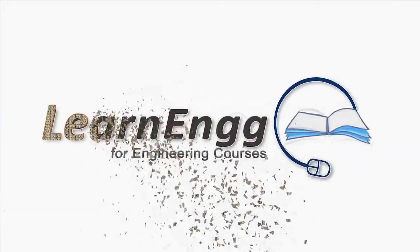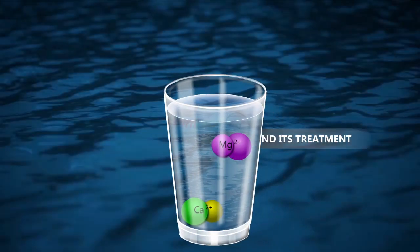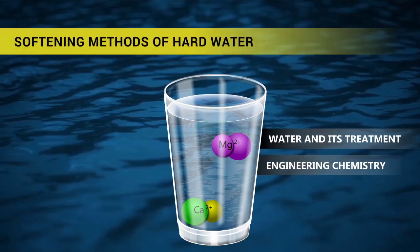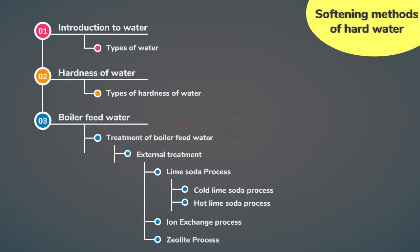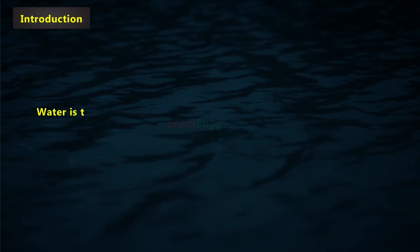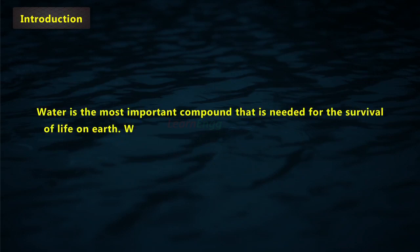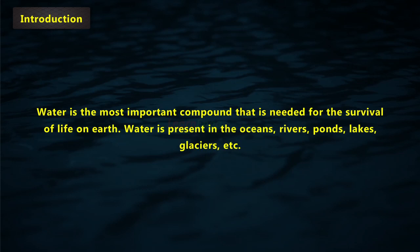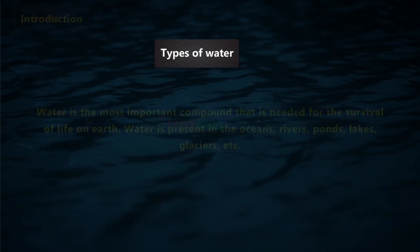In this video, we are going to learn about softening methods of hard water, which is a part of water and its treatment under engineering chemistry. Water is the most important component needed for the survival of life on earth. Water is present in oceans, rivers, ponds, lakes, glaciers, etc.